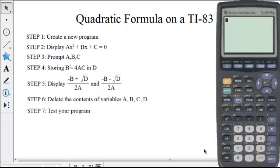The last step is to test the program. To do this, you hit the program button, slide down to the program that you want to test, press enter, and type in values for a, b, and c. I will be using 1, negative 1, and negative 6. The answers come out to be 3 and negative 2.